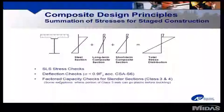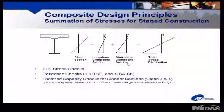A composite section is inherently a section built in stages, and the loads applied to each stage are locked in to that active part of that stage. Therefore, the stresses on any part is the summation of the stresses from each stage. Namely, on the steel alone, we have the steel self-weight and the wet concrete weight. Onto the long-term composite section, we have long-term loads such as superimposed dead load. And onto the short-term composite section, short-term loads like traffic loads. The total stress distribution is the addition of all of those. This elastic stress history is used for the service limit state stress and deflection checks of all sections.